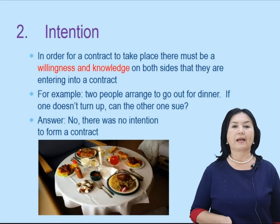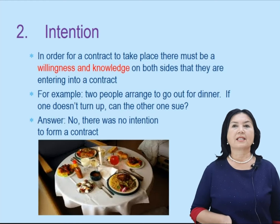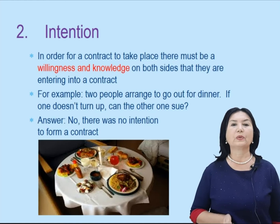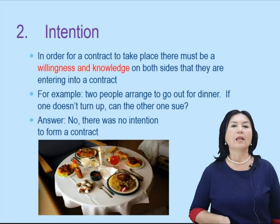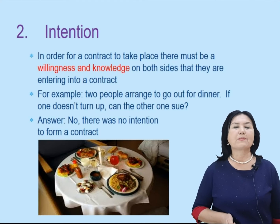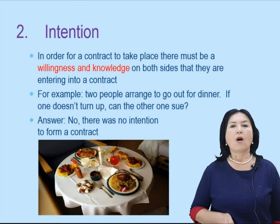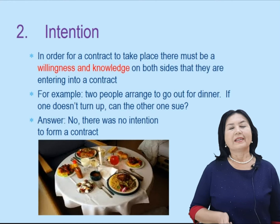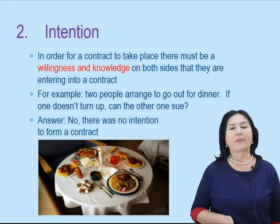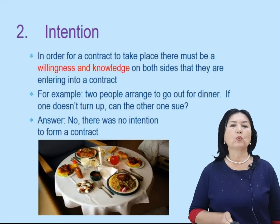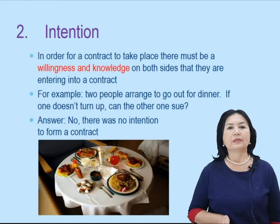Second element of contract is intention. Intention is an idea or plan of what you are going to do. In order for a contract to take place, there must be a willingness and knowledge, and both sides are entering into the contract. For example, two people arrange to go out for dinner. If one doesn't turn up, can the other sue? No, there was no intention to form a contract.